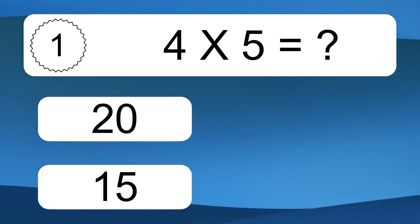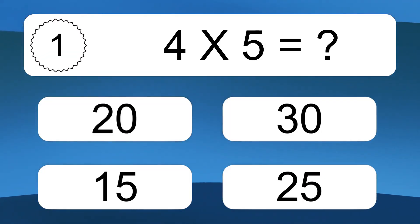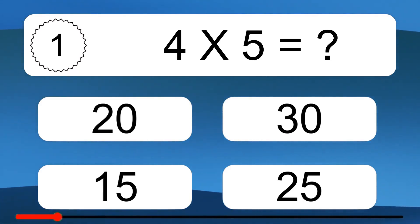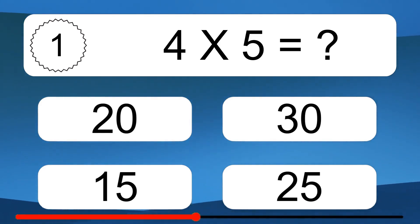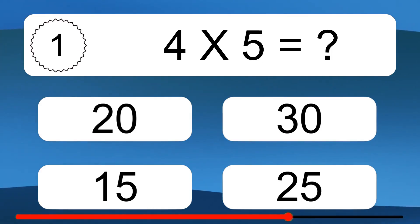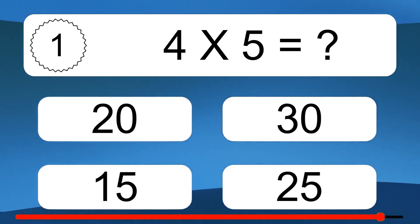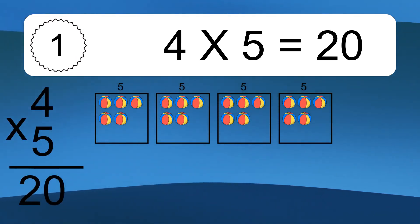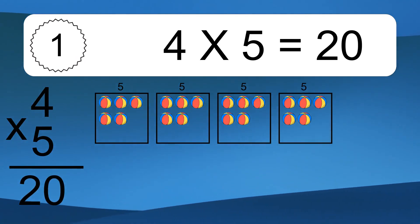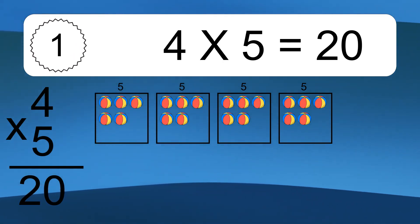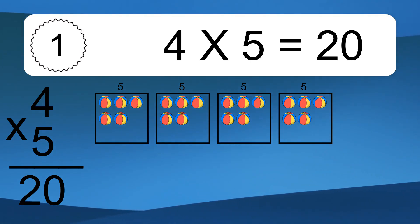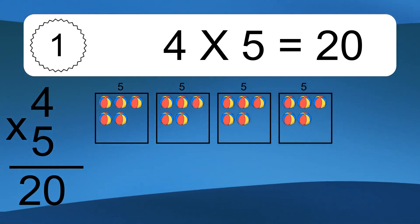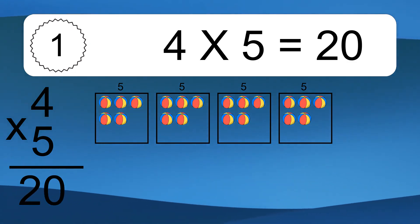4 times 5 equals what? 4 times 5 equals 20. We have 4 boxes, and each box has 5 colorful balls inside. If you count all the balls in all the boxes together, you will have 4 times 5 balls. This equals 20 balls.